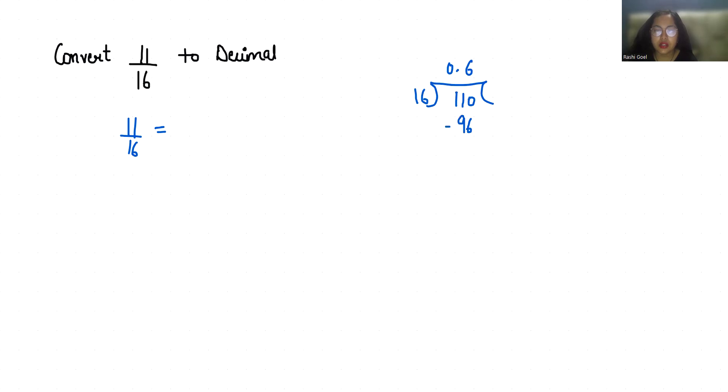So it will become 110. 16 times 6 is 96. So this gives us 14. We will take 0.